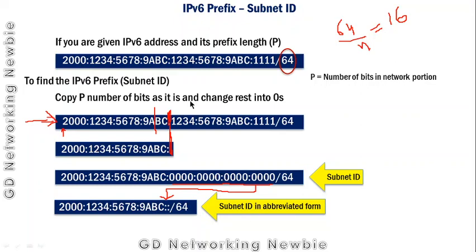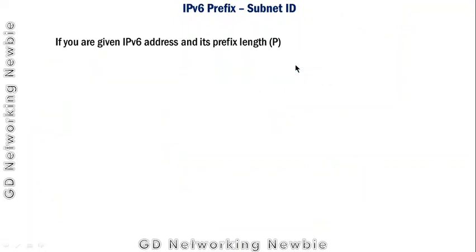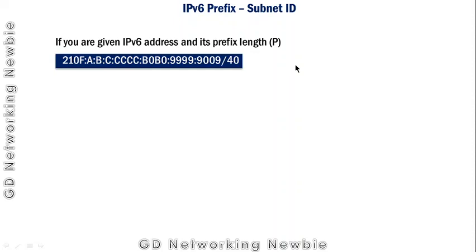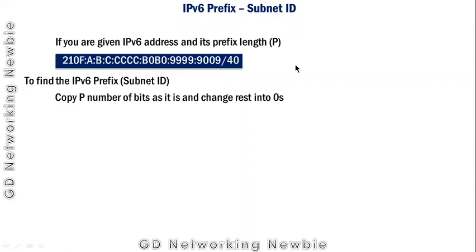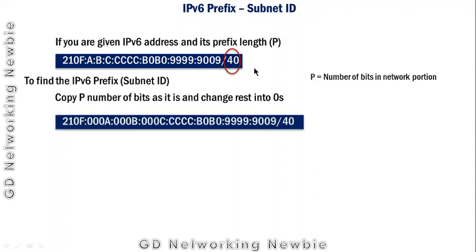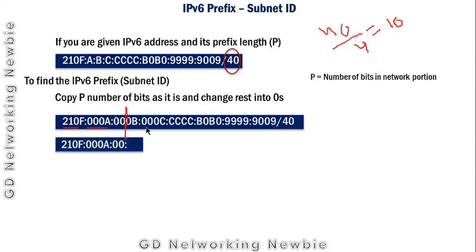Now let's look at another example. We have been given an IPv6 address and we have to find the subnet ID. We copy p number of bits — p being the prefix length, which is 40 in this case — and change the rest to zeros. 40 bits means 40 divided by 4 equals 10 hexadecimal digits. Counting: 1, 4, 8, 10 — so we copy these 10 hexadecimal digits as-is.